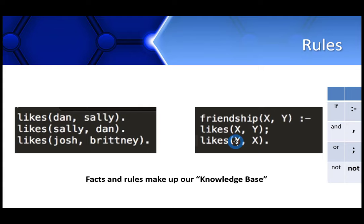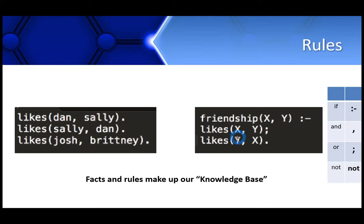Now let's see an example for rules. We have three facts: Dan likes Sally, Sally likes Dan, and Josh likes Brittany. Our rule states that there exists a friendship between X and Y if X likes Y or Y likes X. The semicolon here is for 'or,' meaning if either one of these statements is true, the friendship will hold. So if I make a query about Sally and Dan, it will be true because the first statement holds — X is Sally and Y is Dan.